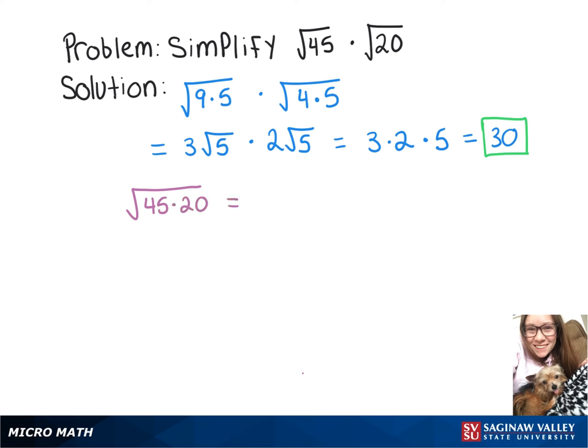And then 45 times 20 is 900, so we've got the square root of 900. And the square root of 900 is 30.